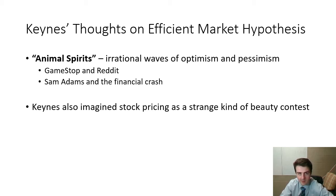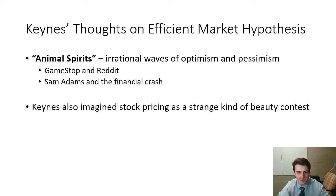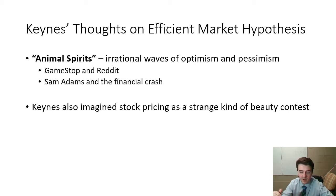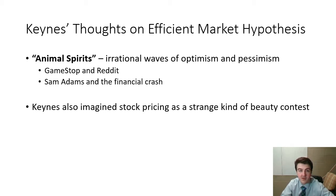Keynes believed that maybe some stock pricing is based on actual company valuation, but he kept seeing these irrational waves of optimism and pessimism. People would get really excited about a company or really sprung on one particular stock — or waves of pessimism where they'd say this company is not worth anything. I think there's no better example than GameStop about a month ago. Everybody decided it was worth much more than Wall Street folk had decided it was worth, everybody decided to buy, and obviously the price went up — pretty clearly not linked to the actual valuation of GameStop as a company.